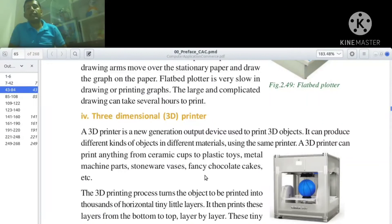The 3D printing process turns the object to be printed into thousands of horizontal tiny little layers.